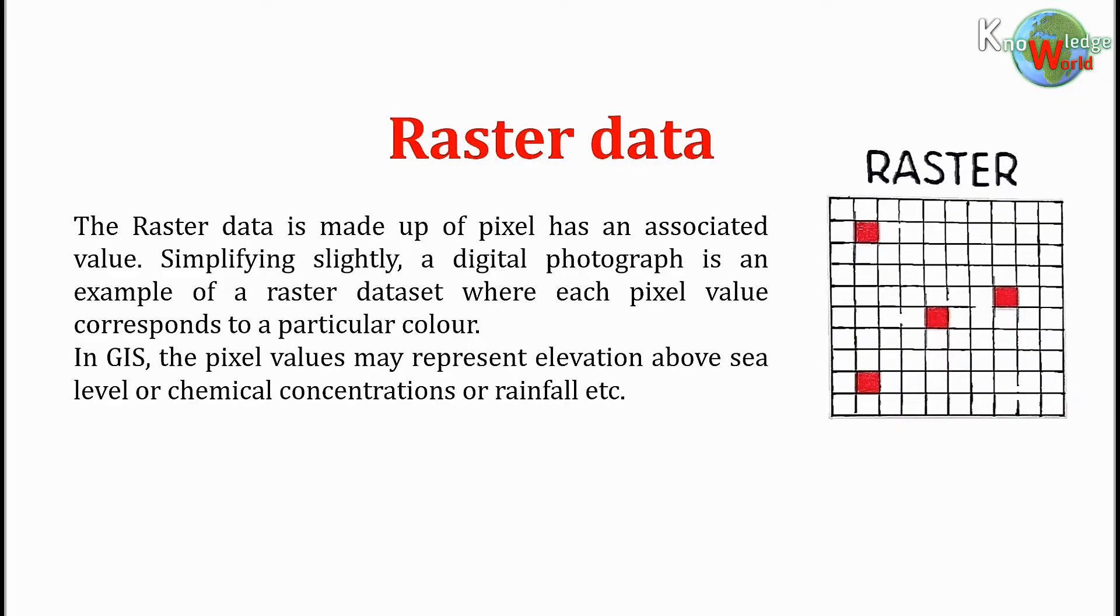In GIS, the pixel values may represent elevation above sea level, or chemical concentrations, or rainfall, etc.